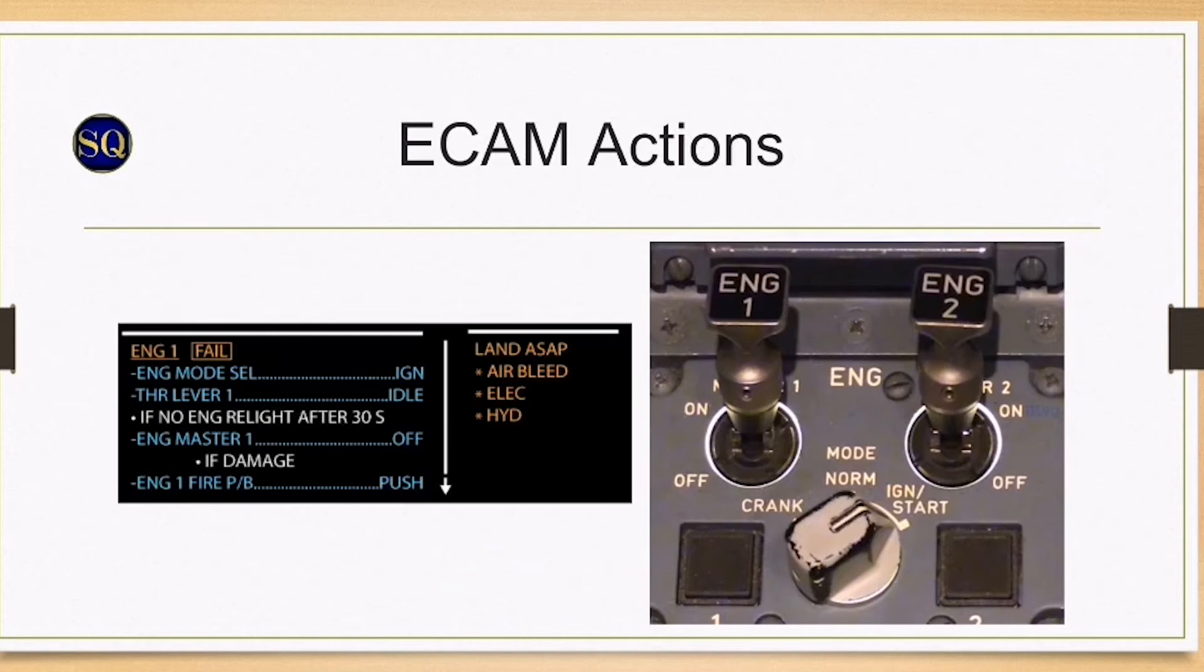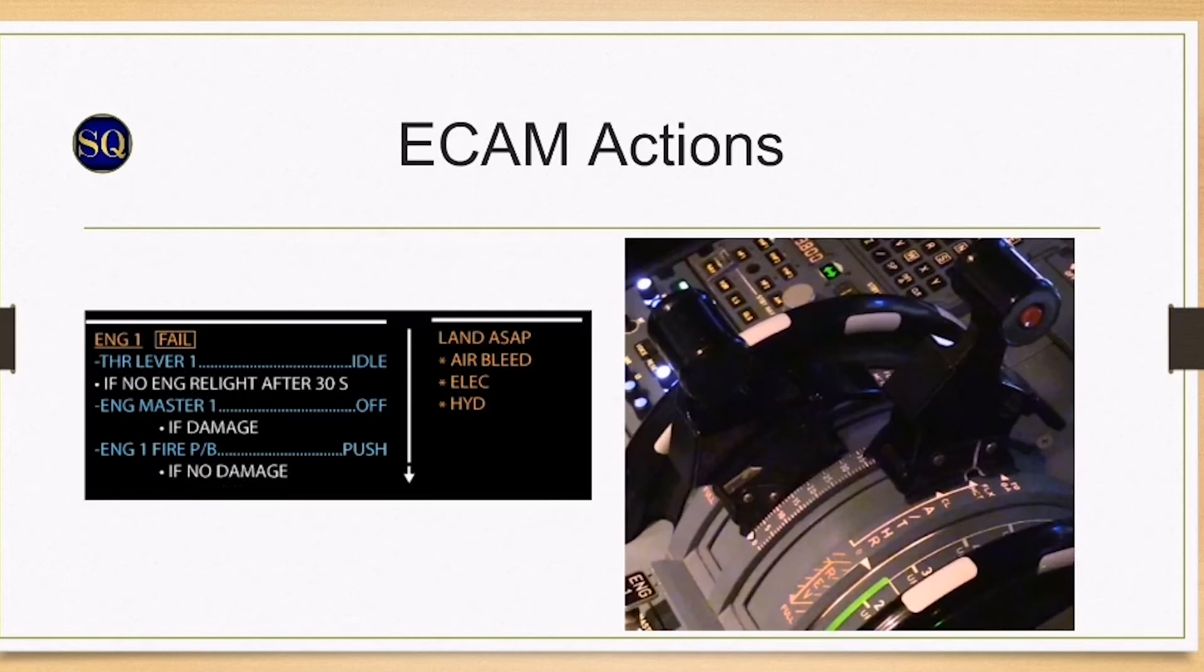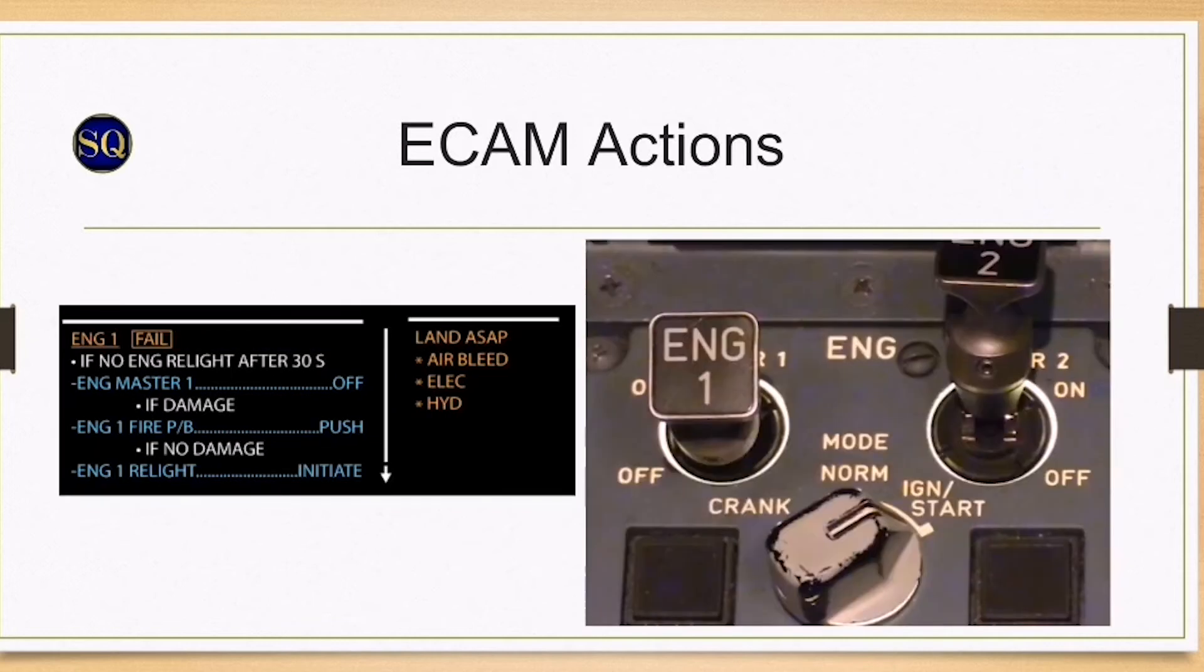Let's dive into the ECAM actions. Engine mode selector: select ignition. Selection of continuous ignition confirms the immediate relight attempt made by the FADEC. Thrust lever idle. If no engine relight after 30 seconds, engine master off. The 30 second countdown starts as soon as the engine fail is triggered. The crew must decide if the engine is damaged and needs to be secured, or not damaged and a relight attempt can be made.